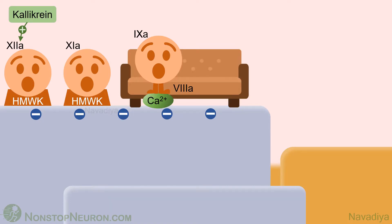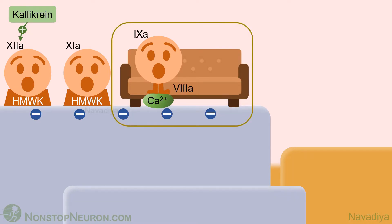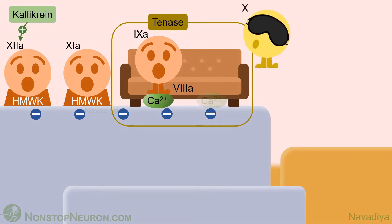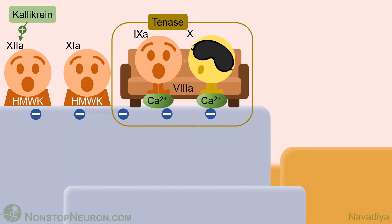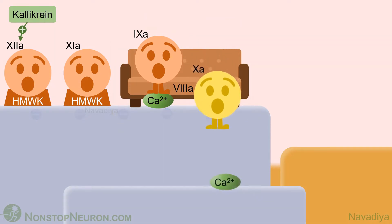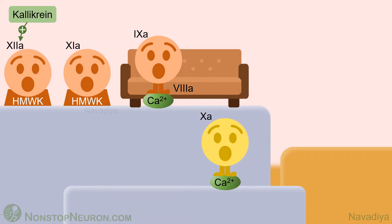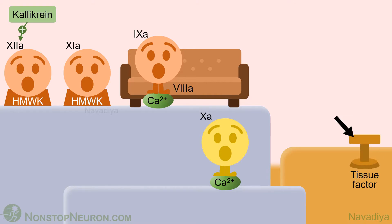Activated factor 9 associates with factor 8, and factor 8, 9, calcium, and phospholipid form a complex called tenase. As per its name, the tenase complex activates factor 10. Factor 10 is the first member of the common pathway. Now let's see the extrinsic pathway. It is called extrinsic because it starts with a factor that lies outside the blood. Under healthy conditions, endothelial cells prevent exposure of blood to tissue factor.